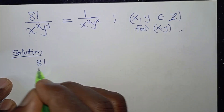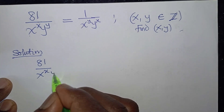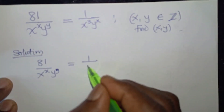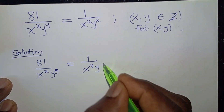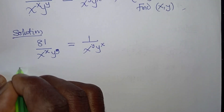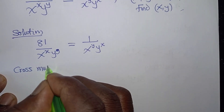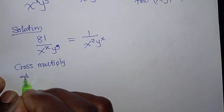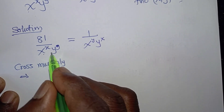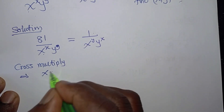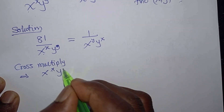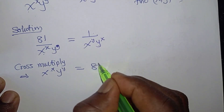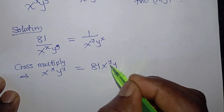Let's write the equation. We have 8 to 1 over x to the power x, y to the power y, equals to 1 over x to the power y, y to the power x. So let's cross multiply. If you cross multiply here, this will give us x to the power x, y to the power y times 1. So that will give us x to the power x, y to the power y equals to 81 times this — that will give us 81 x to the power y, y to the power x.